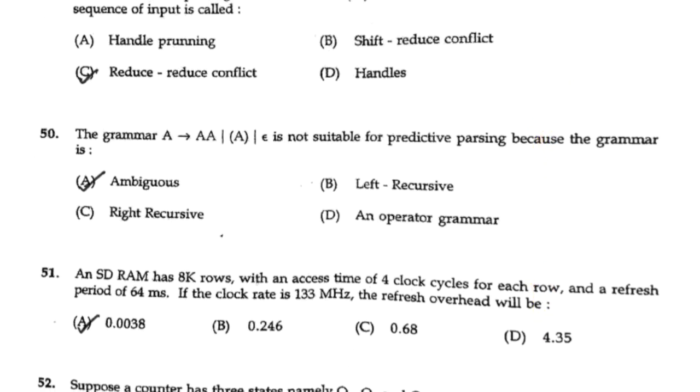The grammar A → A A is not suitable for predictive parsing because the grammar is ambiguous.